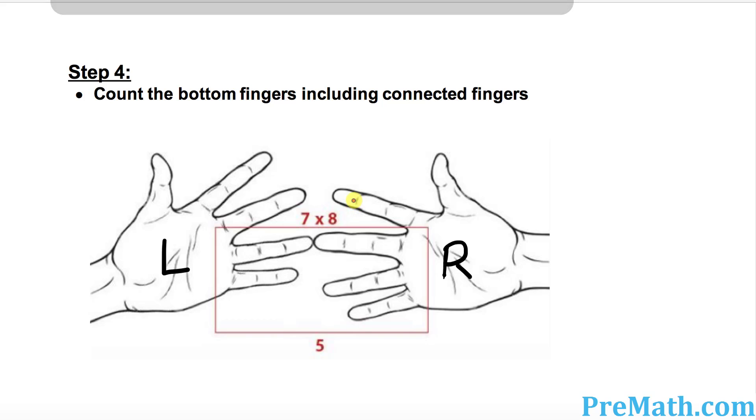In step number 4, I want you to count the bottom fingers as you can see in this box, including the fingers that are connected. So how many? Let's count: 1, 2, 3, 4, and 5. So the bottom number of fingers is 5.